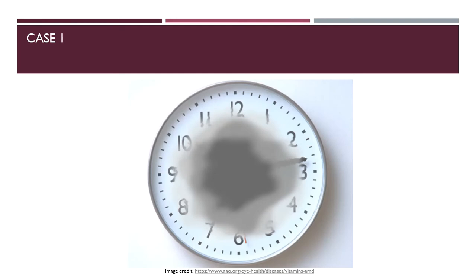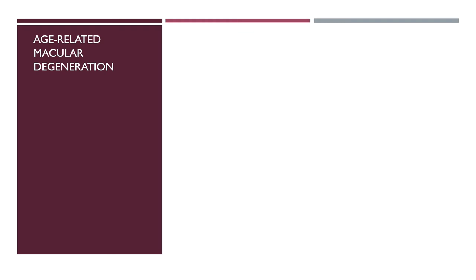Case one: a grandfather suddenly reports he cannot see the clock. He reports that the center of the clock is missing but the periphery is still present. Age-related macular degeneration is a retinal form of sudden vision loss. The vision loss from this disease may be progressive and slow in the dry form, but can be sudden in the wet form.